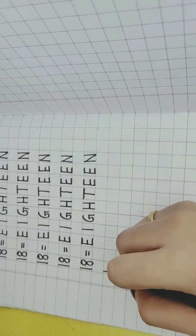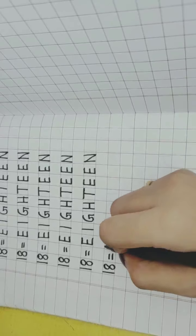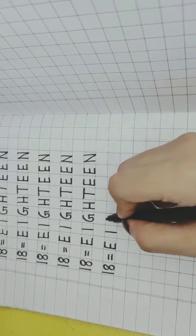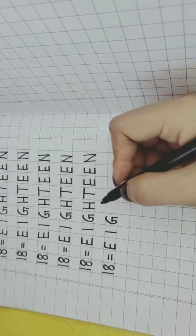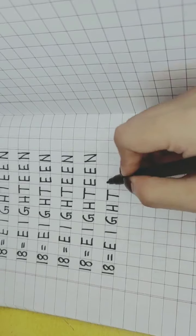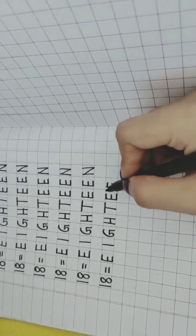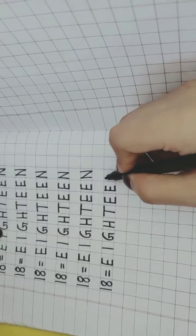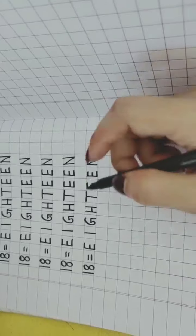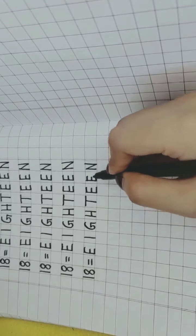Again, one, eight, 18. E for elephant, I for ice cream, G, H, T, E, E, E for elephant, right? N for nest. So this is 18. E, I, G, H, T, E, E, N.